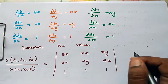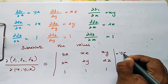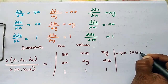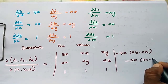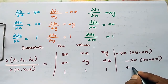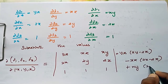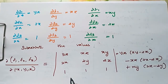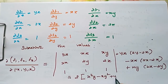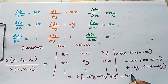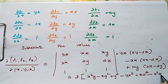Simplifying the determinant: y·z into (2y minus 2z), minus x·z into (2x minus 2z), plus x·y into (2x minus 2y). This simplifies to 2 into (x square·y minus x·y square plus y square·z minus y·z square plus x·z square minus x square·z).